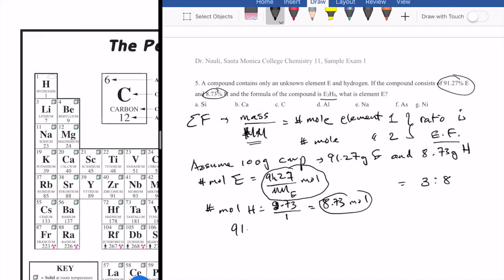We can write an equation that looks like this, 91.27 divided by the molar mass of E over 8.73, because this is basically the ratio of number of moles of E to hydrogen, should equal 3 over 8.